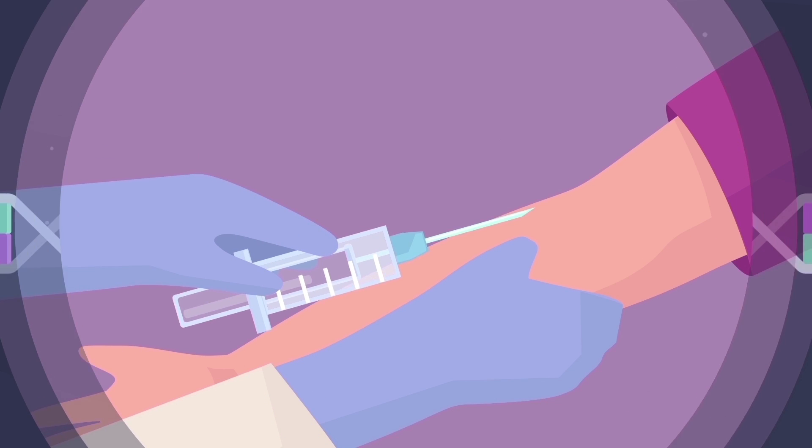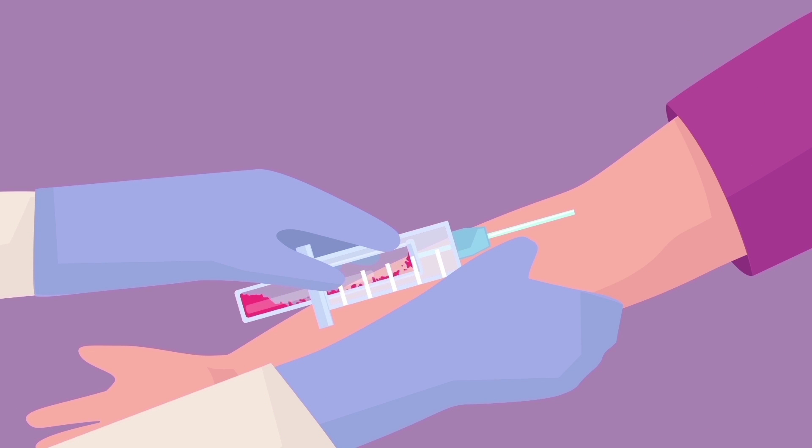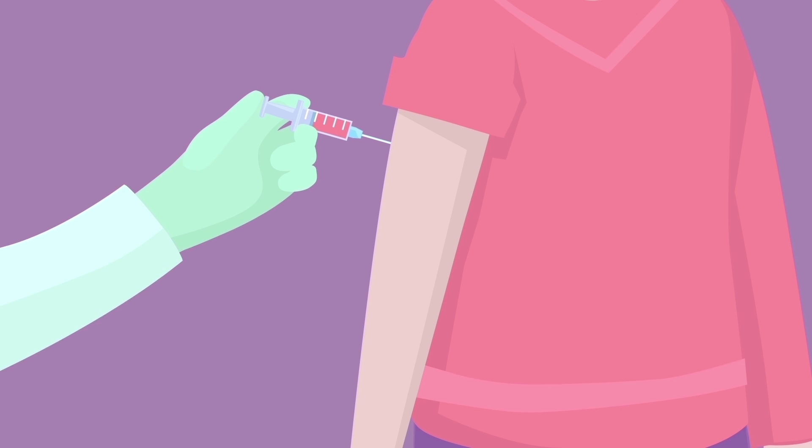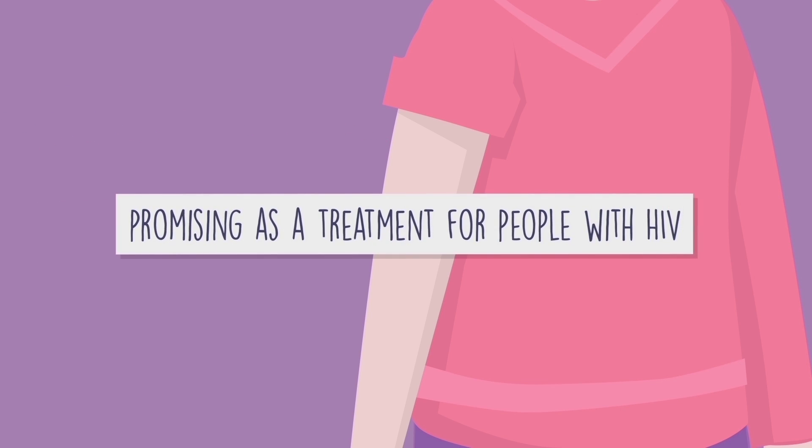During some of the first gene editing trials, scientists collected cells from a patient's blood, made the needed genetic edits, and then injected the modified cells back into the patient. This gene editing approach looks promising as a treatment for people with HIV.